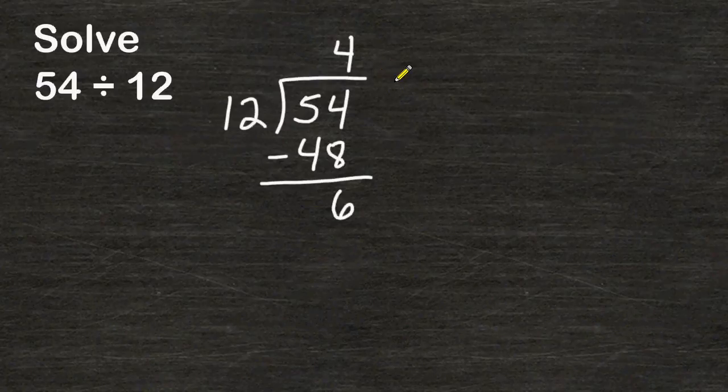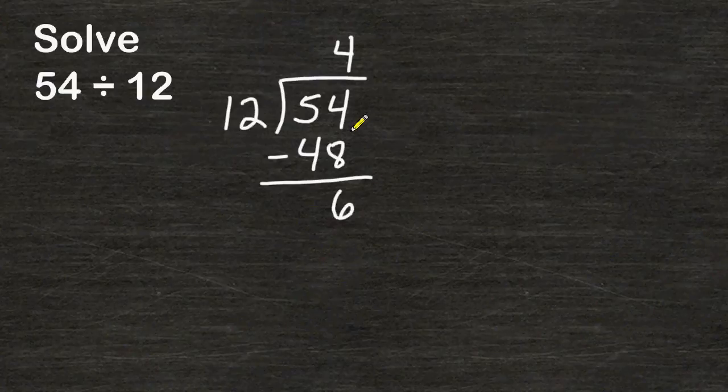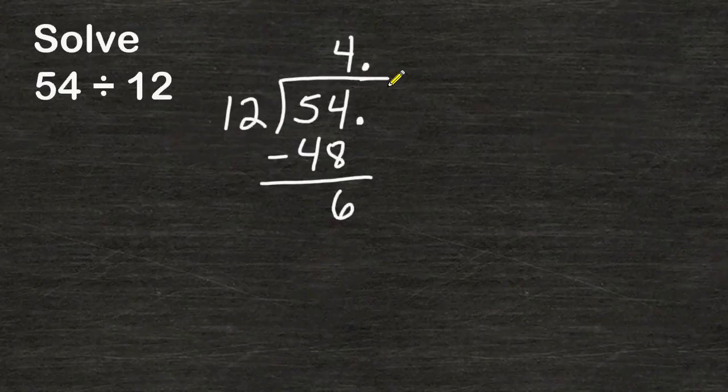Now at this point a lot of people want to write 4 remainder 6 but sometimes you are asked to express your answer as a decimal. So what we are going to do is if you have a remainder and there are no other digits to carry down, you simply add a decimal here, a decimal here, and you write a zero after your decimal.